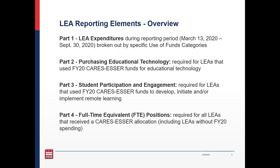Here's an overview of the components required in the report. Part one is LEA expenditures during the reporting period, broken out by specific use of fund categories. If your LEA did not spend during FY20, you don't need to complete this section. Part two is purchasing educational technology, asking specific questions on devices and internet. If your LEA spent funding on purchasing educational technology, you'll be required to answer questions on the number of devices purchased and what type of internet services were purchased. Part three is student participation and engagement, required for LEAs that used FY20 CARES ESSER funds to develop, initiate, or implement remote learning — most LEAs will be required to complete this section. Finally, part four is full-time equivalent, or FTE, positions, required for all LEAs that received the CARES ESSER allocation, including LEAs without FY20 spending.